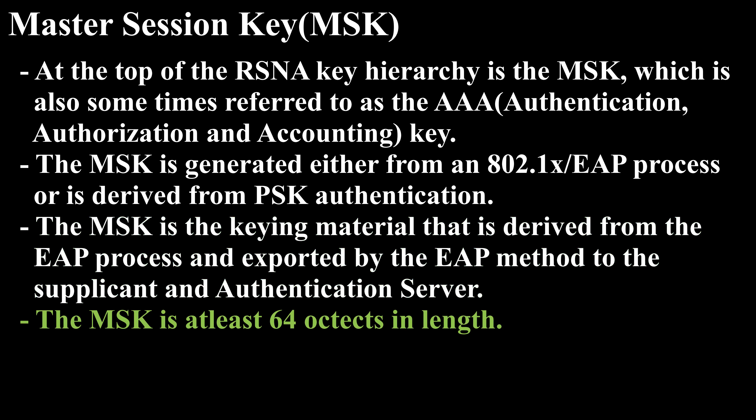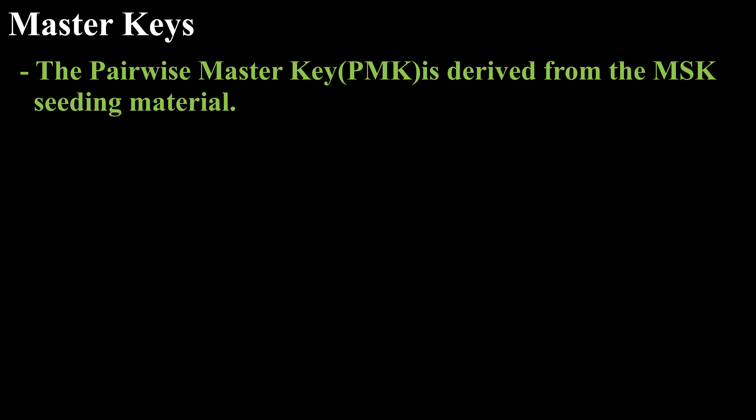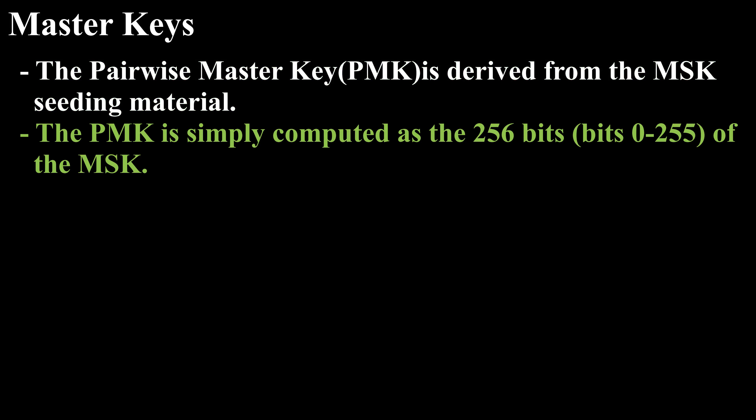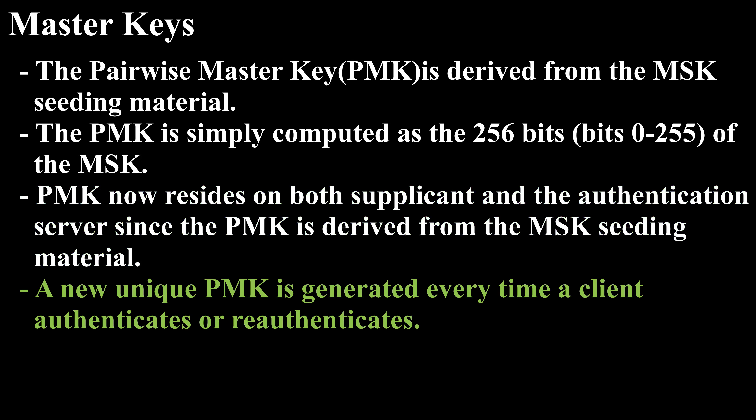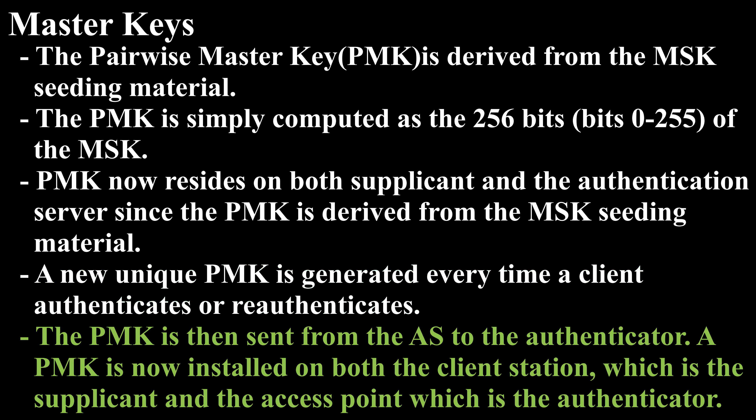The MSK is at least 64 octets in length. The Pairwise Master Key (PMK) is derived from the MSK seeding material and is simply computed as the first 256 bits of the MSK. The PMK now resides on both the supplicant and the authentication server. A new unique PMK is generated every time a client authenticates or re-authenticates. The PMK is then sent from the authentication server to the authenticator, and is installed on both the client station (the supplicant) and the access point (the authenticator).